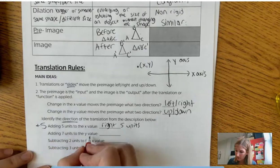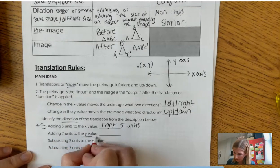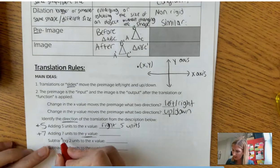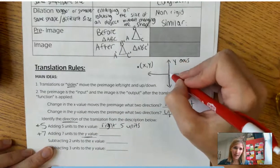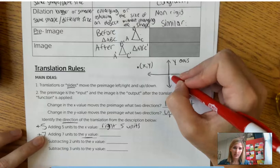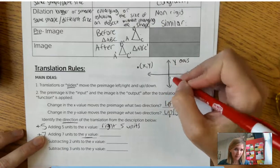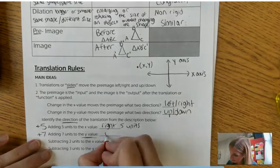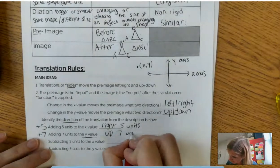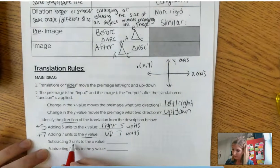Alright. Adding seven units to the y value. If I'm adding seven, I know that the y value takes me up or down, right? So if I'm adding seven, am I going up seven or down seven? I hope you said up seven. Up seven units.